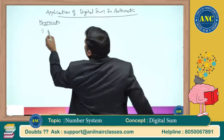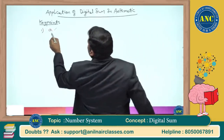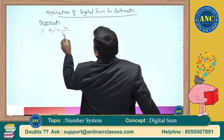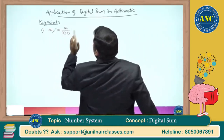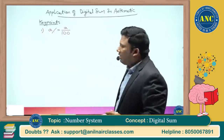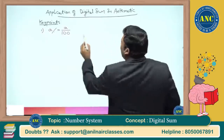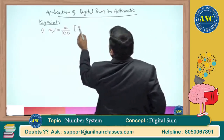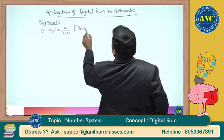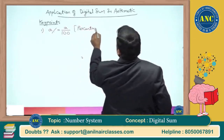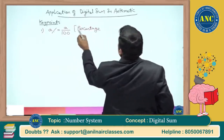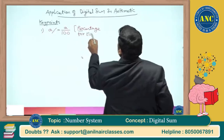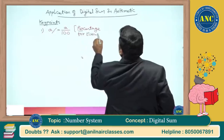First, a percentage is defined as a on hundred. A percentage is for every hundred. 'Per' means 'for' and 'cent' means 'every hundred.' So percentage means for every hundred.